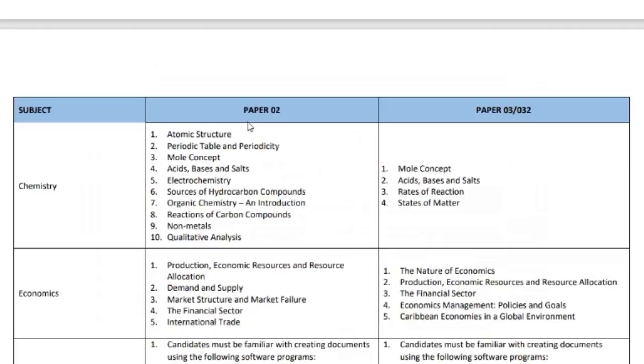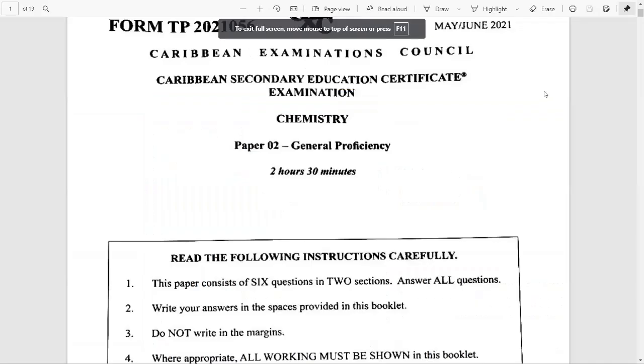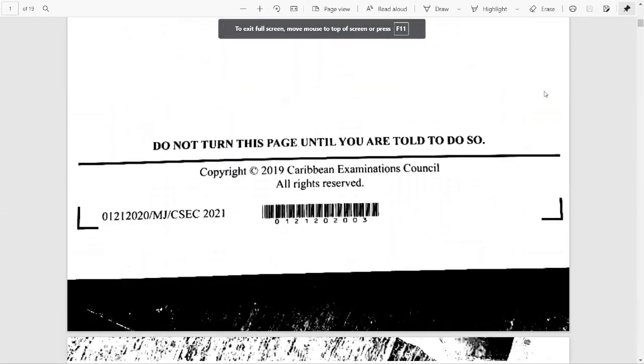For chemistry, we were expecting atomic structure, periodic table and periodicity, the mole concept, acid bases and salts, electrochemistry, sources of hydrocarbons, organic chemistry, reactions of organic compounds, non-metals and qualitative analysis. And I must say, as we go through the paper, for the most part, these were the topics that did come.